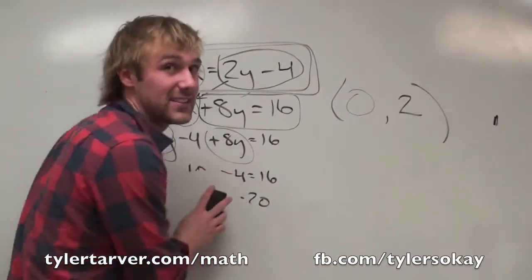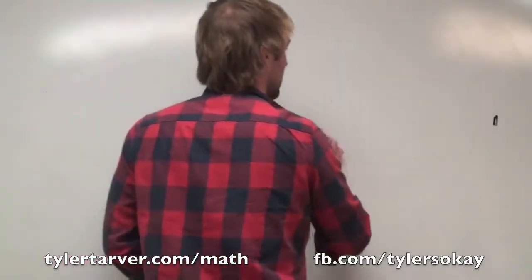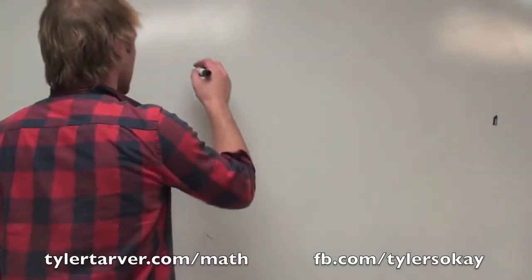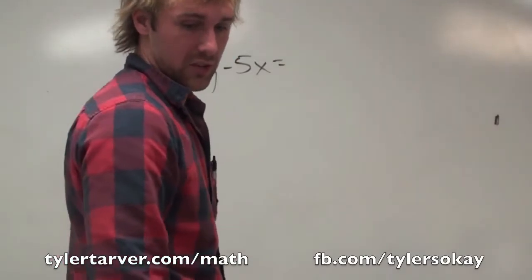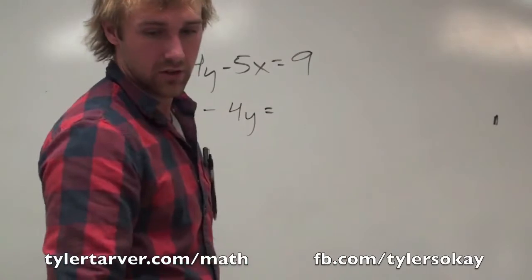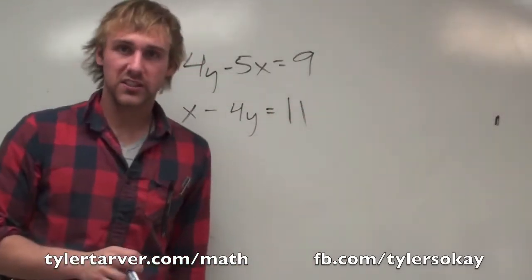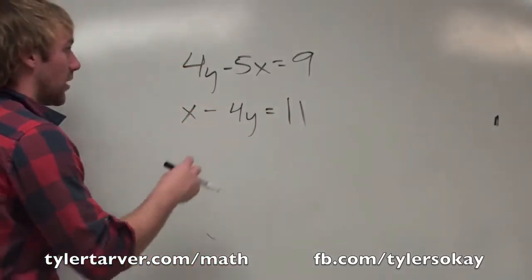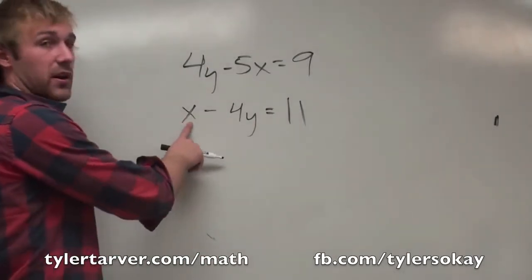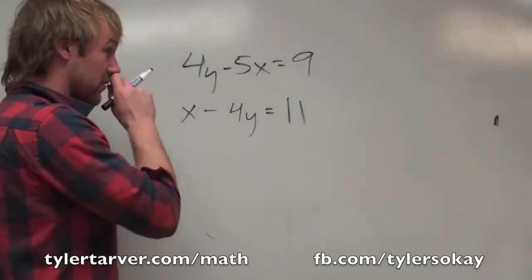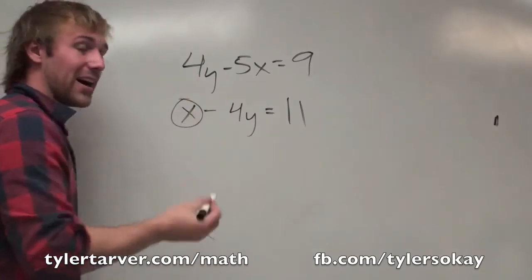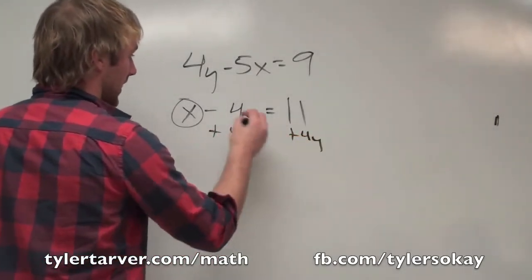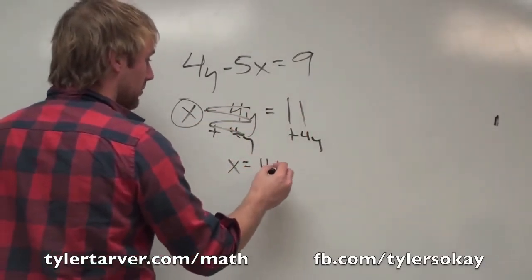I'll do one more. This one is a little more complicated — you're going to have to do substitution and also distribute afterwards. Given 4y minus 5x equals 9 and x minus 4y equals 11. I need to get any x or y by itself. The x in the second equation looks easiest — I just need to get rid of the minus 4y by adding 4y to both sides. So x equals 11 plus 4y.